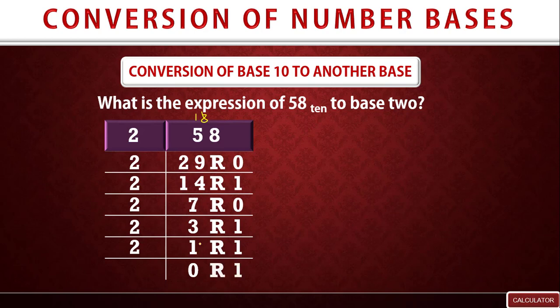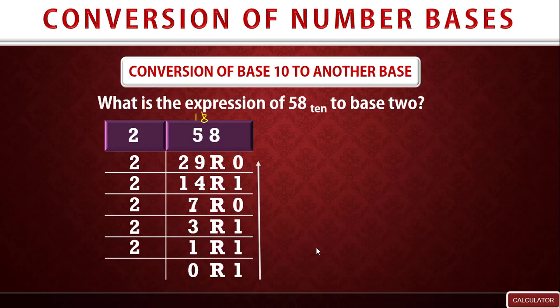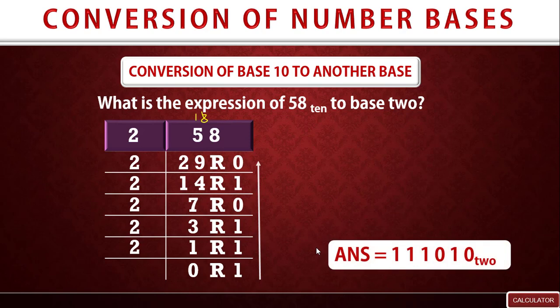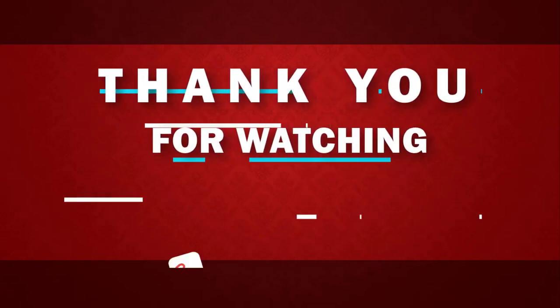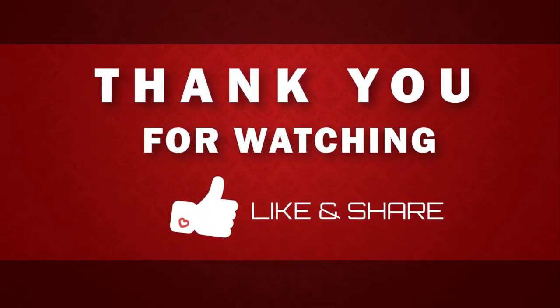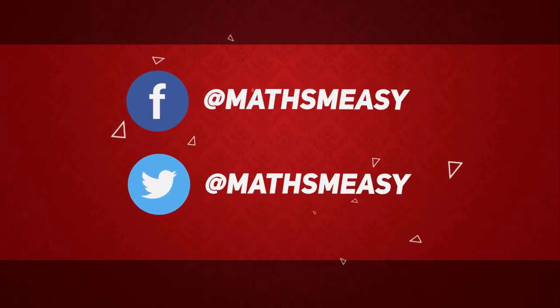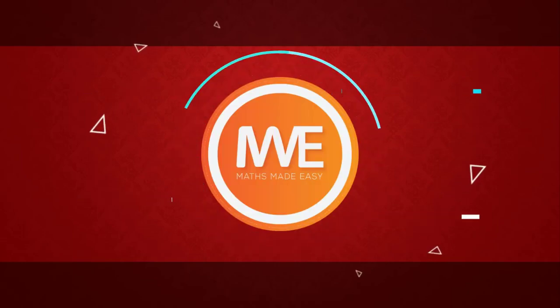Now trace the arrow from the bottom to the top. Following the arrow, we get 1, 1, 1, 0, 1, 0. So the conversion of 58 in base 10 to base 2 gives us 111010 as the final answer.